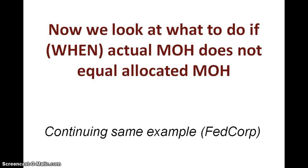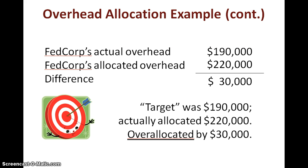Let's take a look at what we have to do if actual manufacturing overhead does not equal allocated manufacturing overhead. It's not a matter of if — it's actually when — because rarely will you ever find actual overhead equaling what you've allocated. FedCorp's actual overhead was $190,000, covering utilities, salaries, and so on. Based on our estimates and using the actual allocation base, we allocated $220,000, so there is a $30,000 difference.